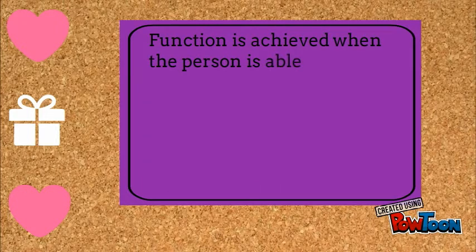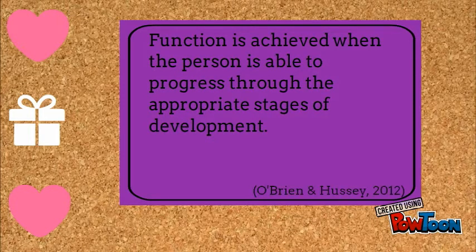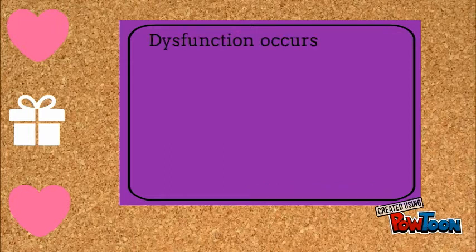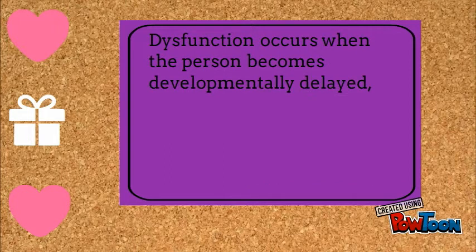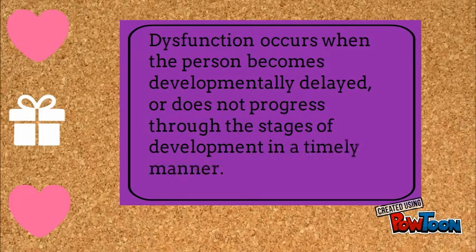Function is achieved when the person is able to progress through the appropriate stages of development. Dysfunction occurs when the person becomes developmentally delayed or does not progress through the stages of development in a timely manner.